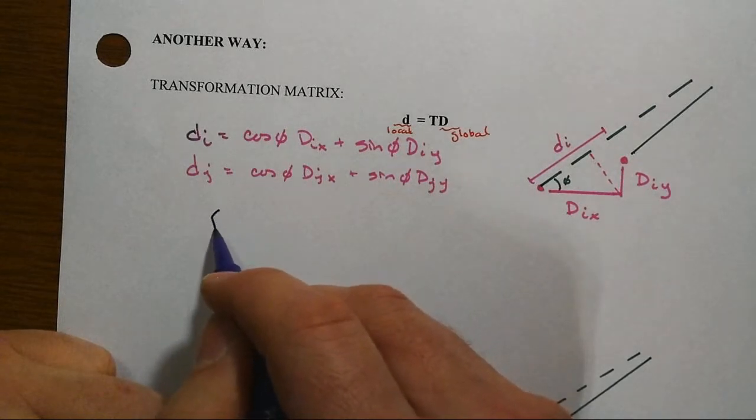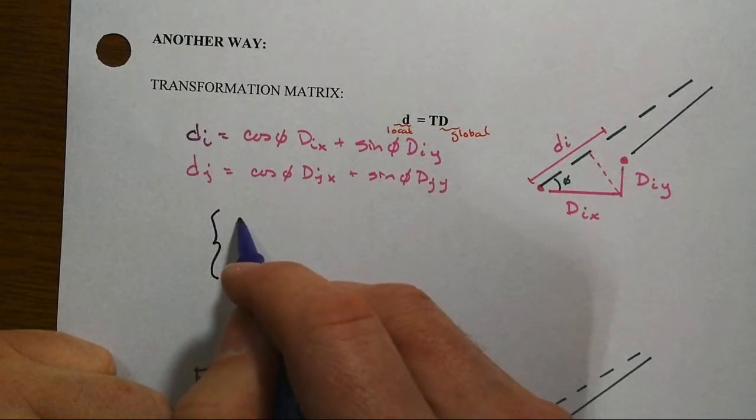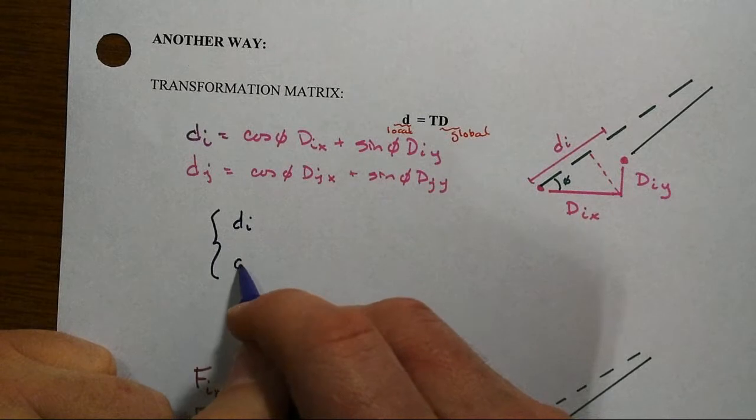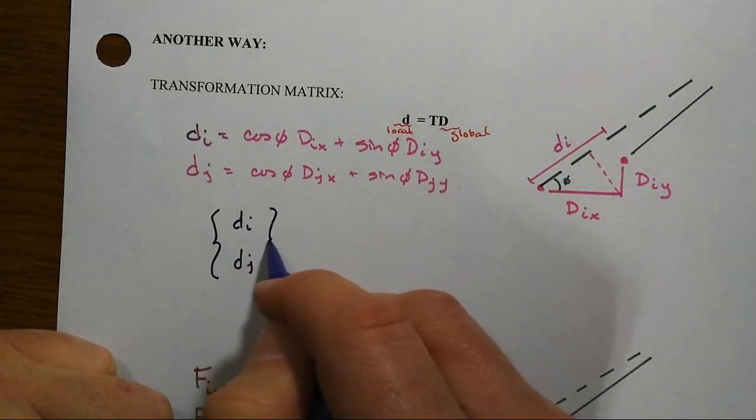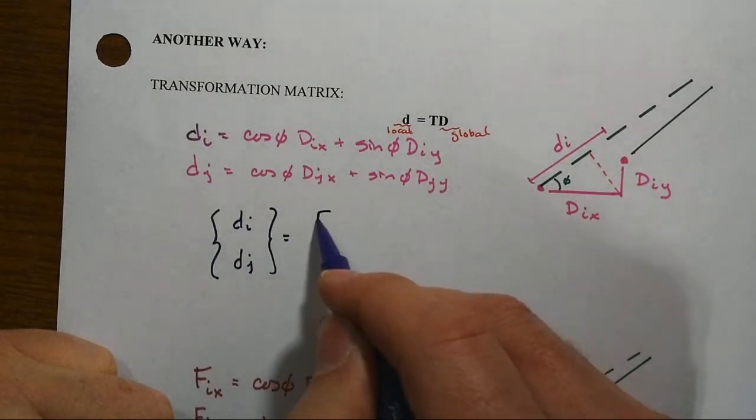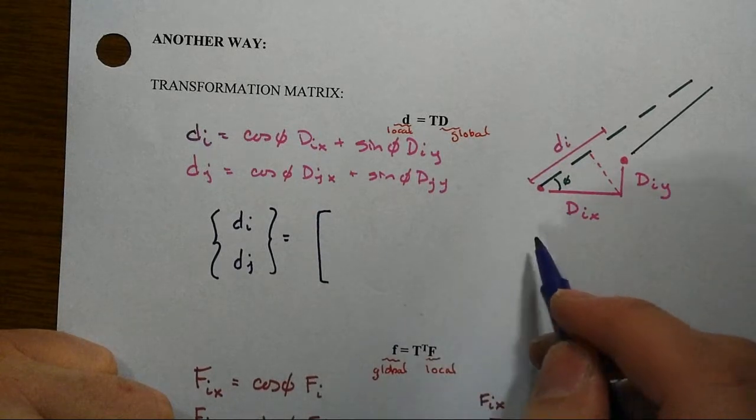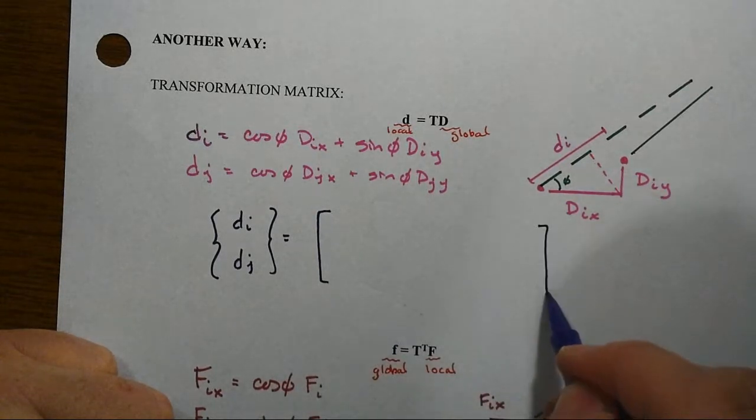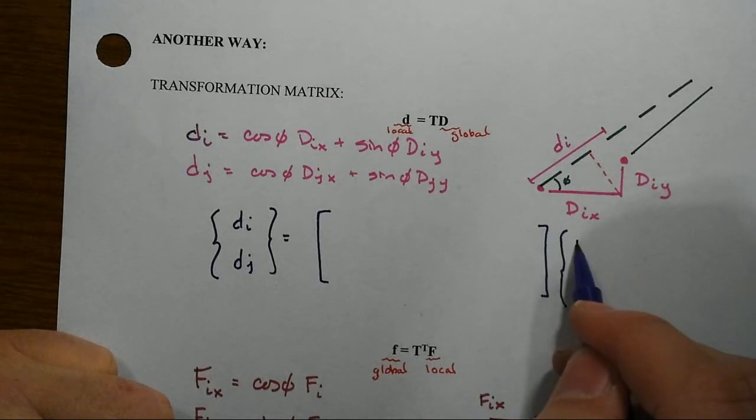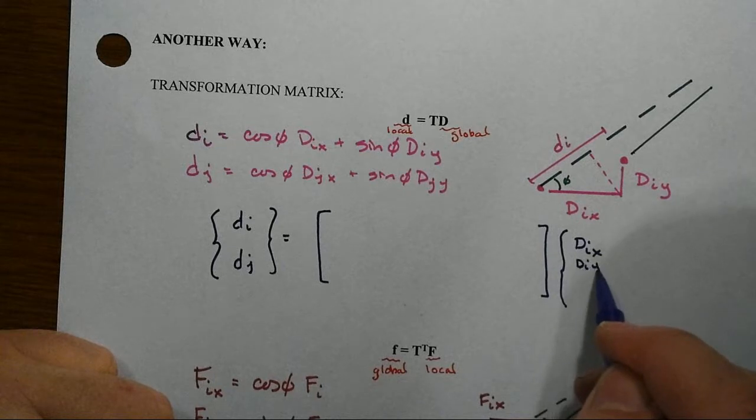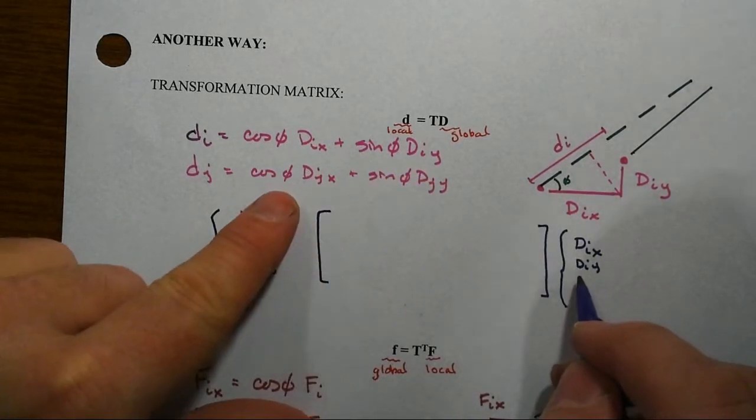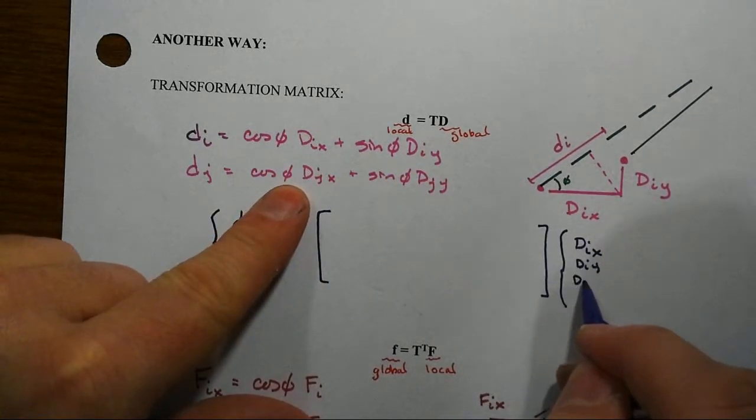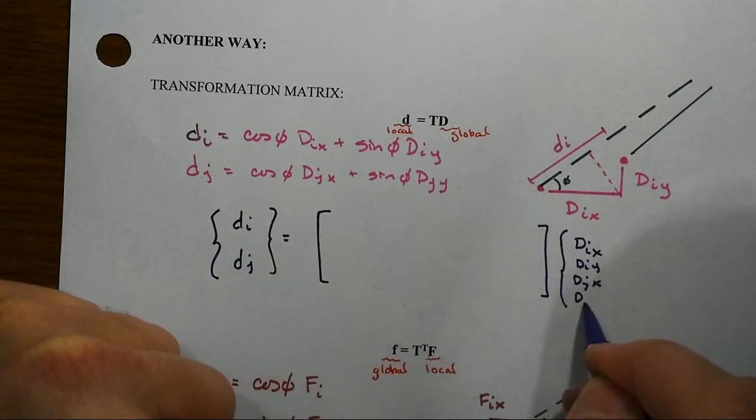And so if we rewrite these two equations in the following very special way, here's what we're going to end up with. We're going to have a big matrix here, you don't know quite why it's so big but you'll see it here in just a second. And then you've got the DIx and the DIy, that's those two, and then you have the others also at the other end, the x and the y components.